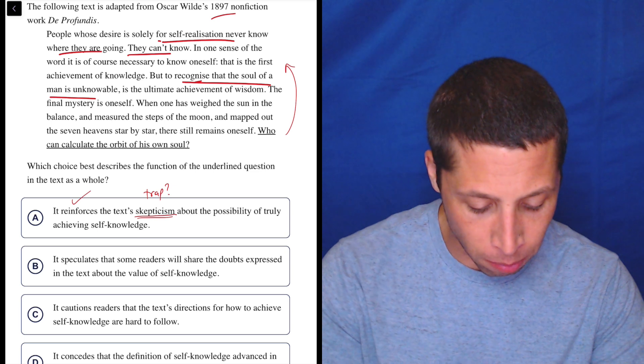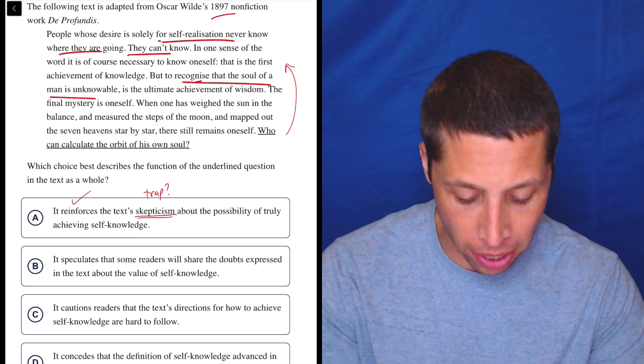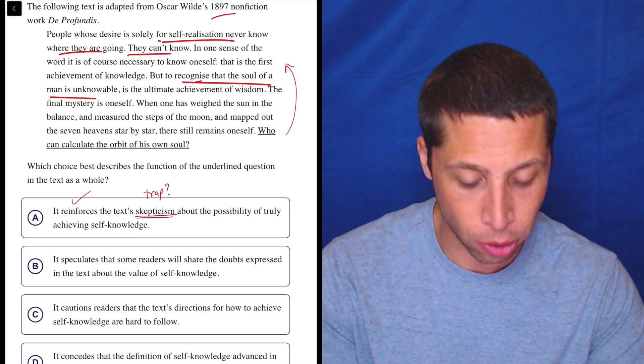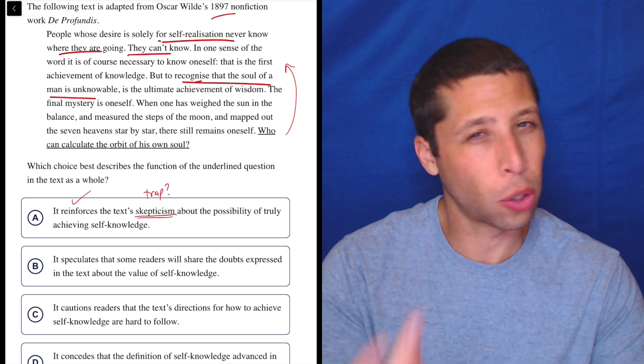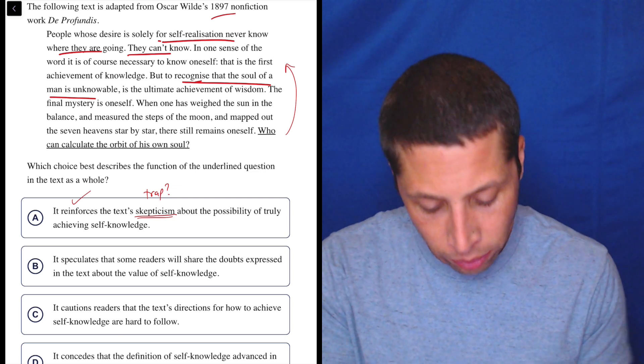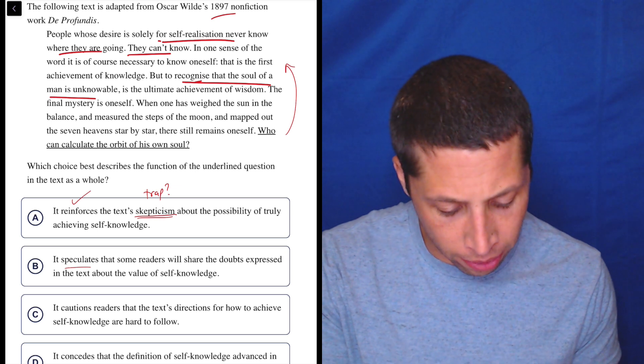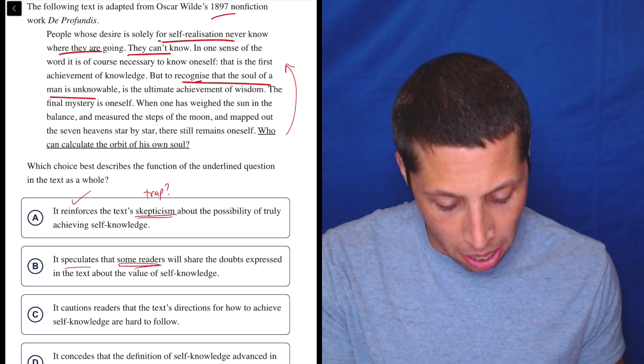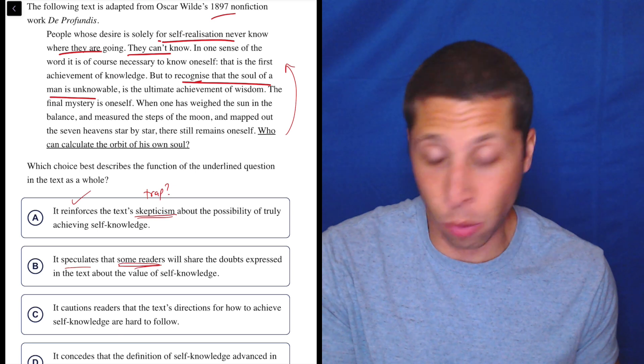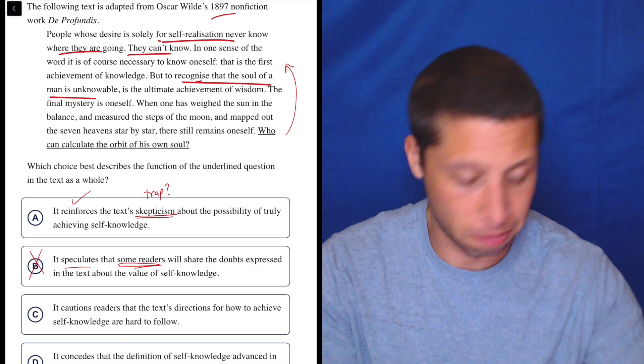It speculates that some readers will share the doubts expressed in the text about the value of self-knowledge. Well, it's hard for a question to speculate, right? A speculation is a guess. So if you're questioning, how are you guessing? So I don't think it's speculating. And did they say something about some other readers? I don't think so. It seems to just be Oscar Wilde talking this whole time. So this seems just wrong.